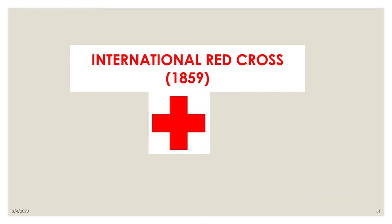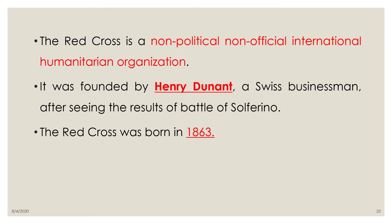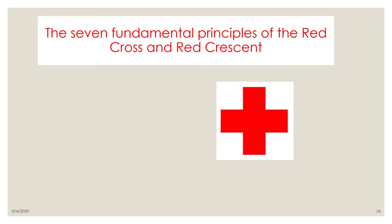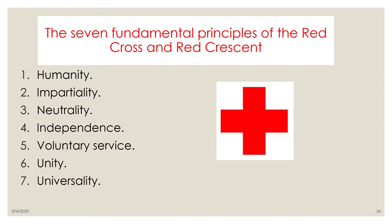The International Red Cross is a non-political, non-official international humanitarian organization. It was founded by Henry Dunant, a Swiss businessman, after he witnessed the Battle of Solferino. The Red Cross was born in 1863, with its emblem being a red cross on a white background. The seven fundamental principles of the Red Cross and Red Crescent are: humanity, impartiality, neutrality, independence, voluntary service, unity, and universality.